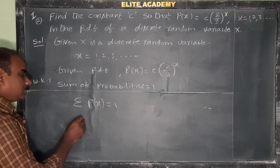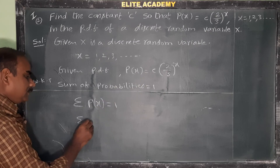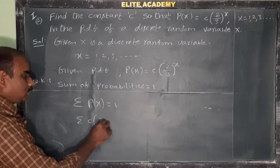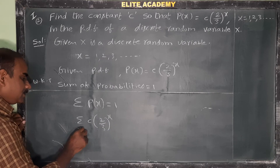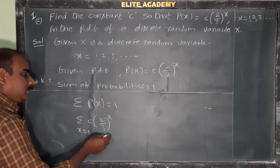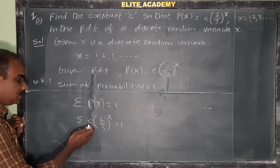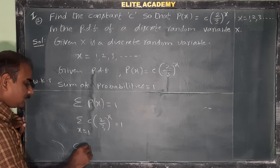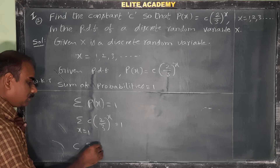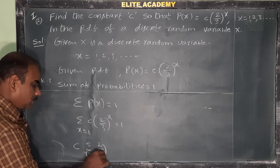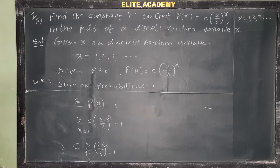Applying the condition, sigma P(x) = 1 means we write c·(2/3)^x summed for x = 1, 2, 3 and so on, equals 1. Taking the constant c outside: c · sigma (2/3)^x for x = 1 to infinity equals 1.